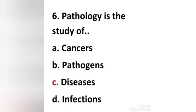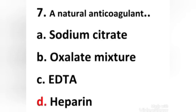Next question: Pathology is a study of — (a) cancers, (b) pathogens, (c) diseases, (d) infections. Right answer is option C: diseases. Pathology is the study of diseases. Pathology has been defined as a branch of medicine which treats of the essential nature of disease. The word pathology comes from the Greek word 'pathos' meaning disease.